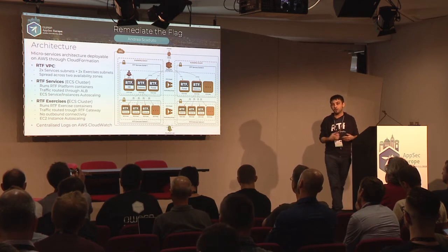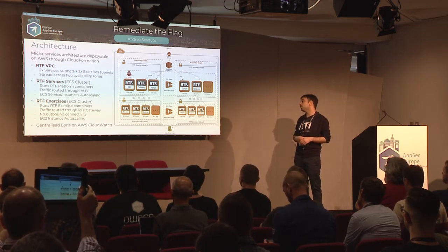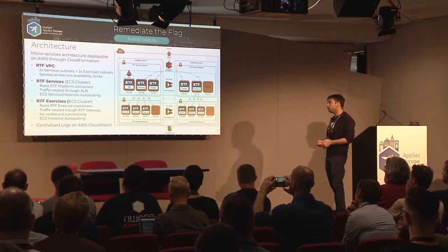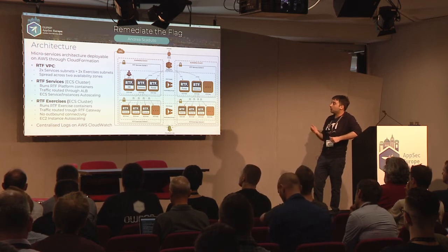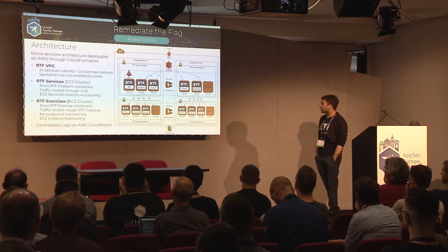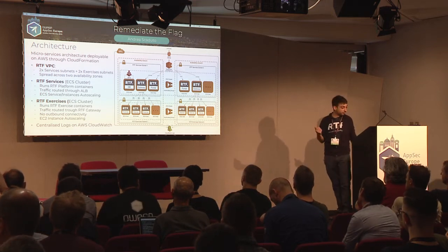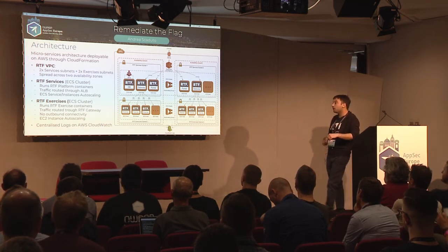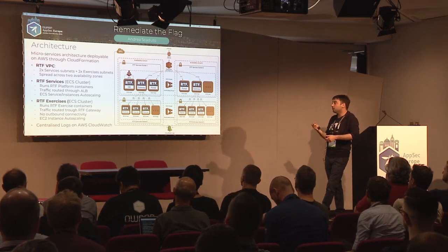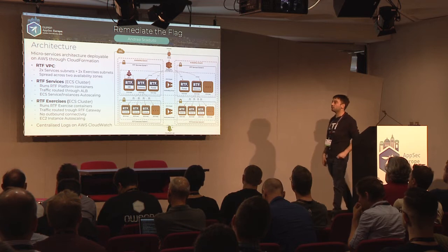RTF is based on a microservices architecture and can be deployed on AWS through CloudFormation. The template creates a VPC with two service subnets for RTF services and two exercise subnets for RTF exercises, in two availability zones for high availability. In the RTF services subnets, the template deploys an ECS cluster running Docker containers for the RTF database, RTF gateway, and RTF portal. The database data directory is mounted from an Elastic File System so data persists regardless of which cluster instance runs the container.